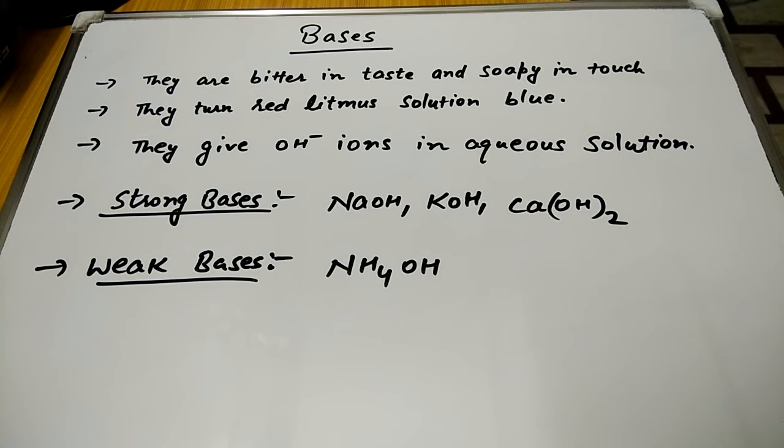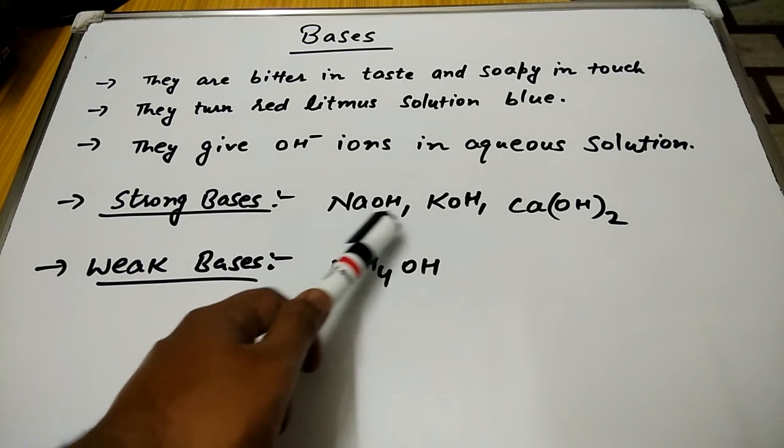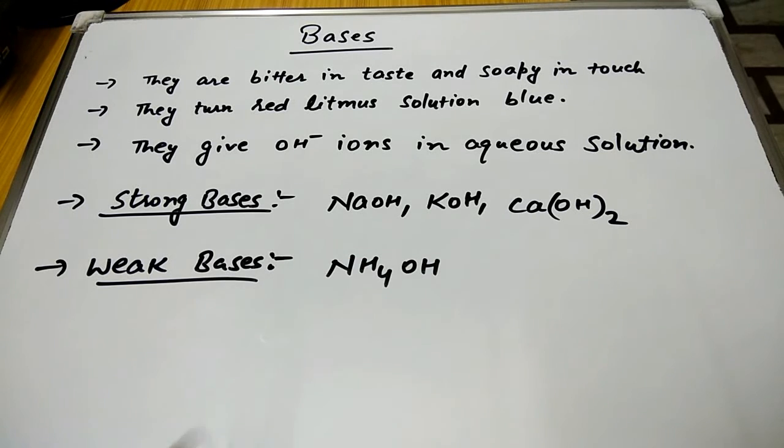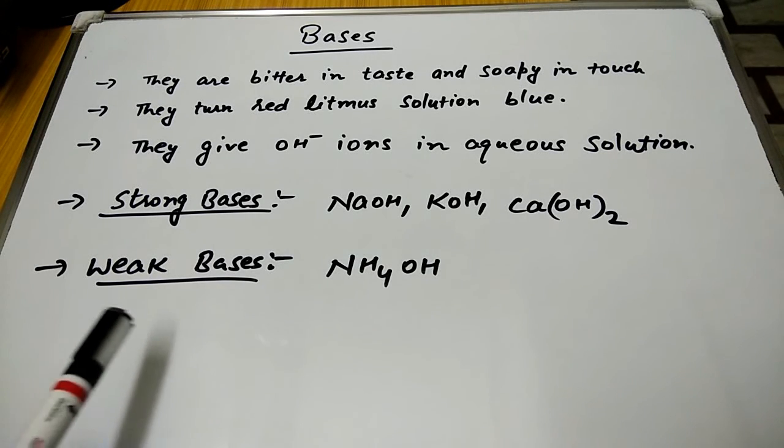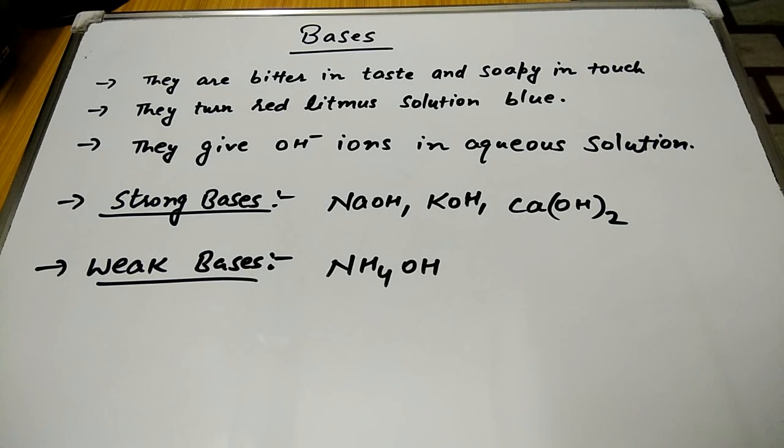Strong bases are NaOH (sodium hydroxide), KOH (potassium hydroxide), and Ca(OH)2 (calcium hydroxide). Weak bases are NH4OH (ammonium hydroxide).